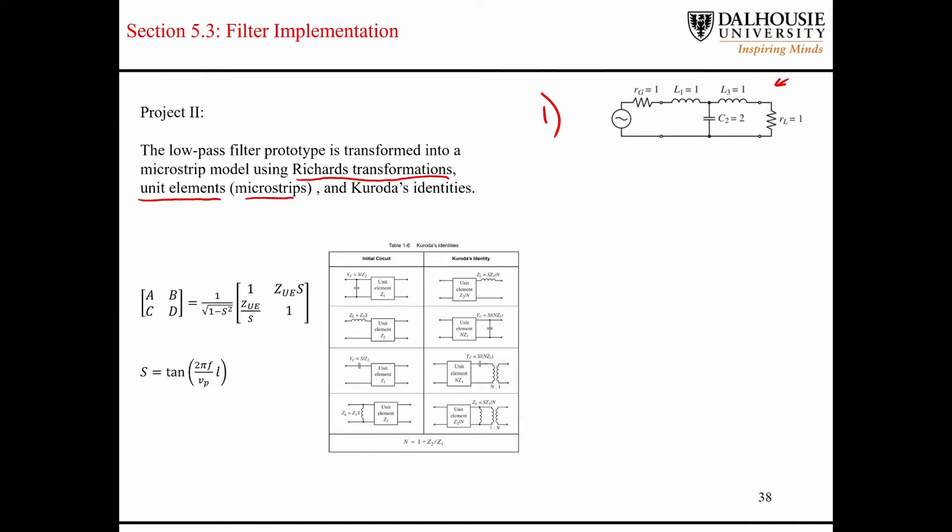I know we didn't talk about that in this course. That's why I don't really want to dive too deep into this. But then finally, the final set of transformations that are going to take place are by using what's known as Crota's identities, which are shown in this table down here.